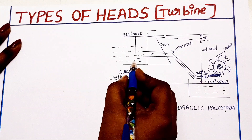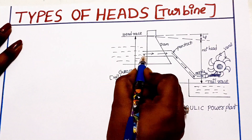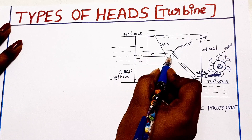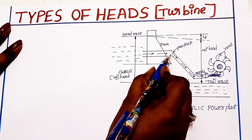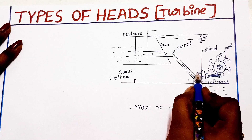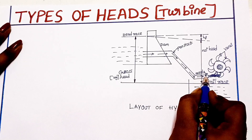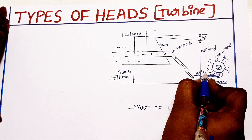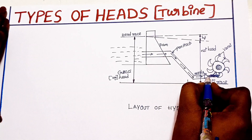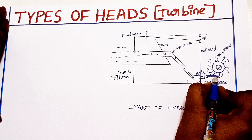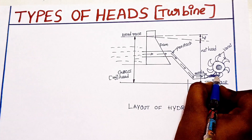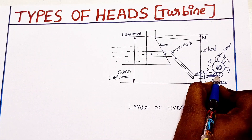This water flows through a pipe. This pipe leads to a nozzle. Through this nozzle, water strikes the turbine blades. The turbine runs by the height of the water, driving the turbine blades.